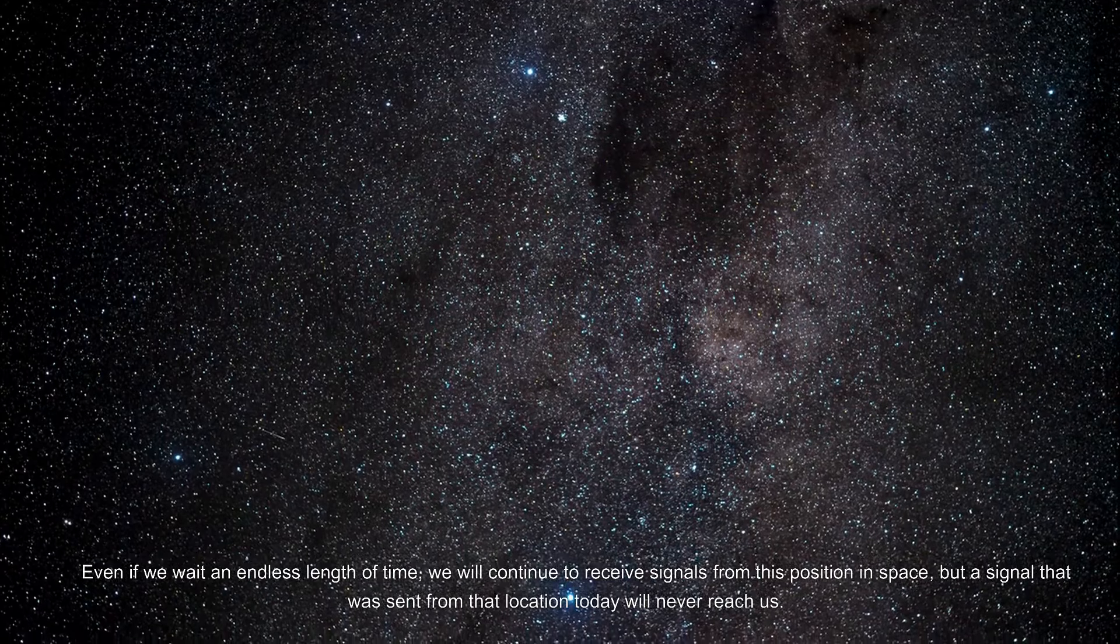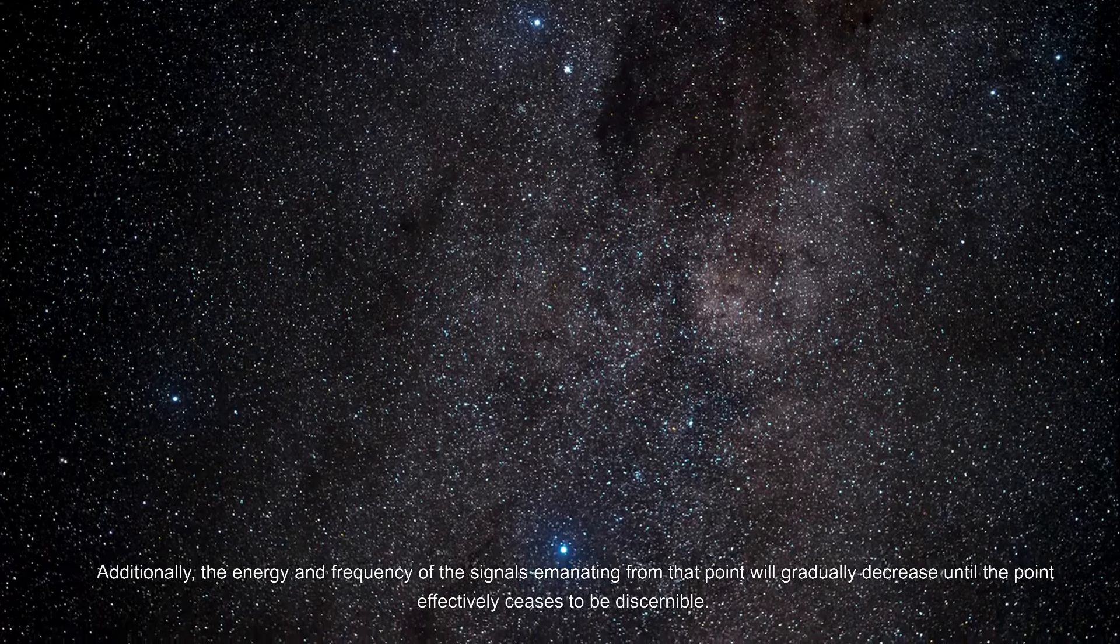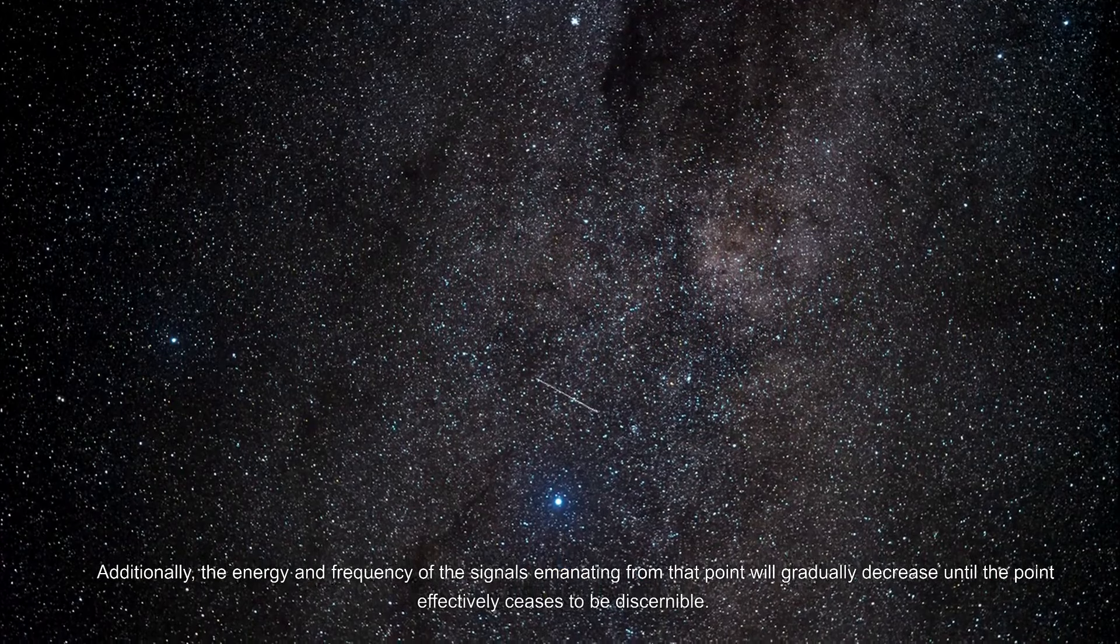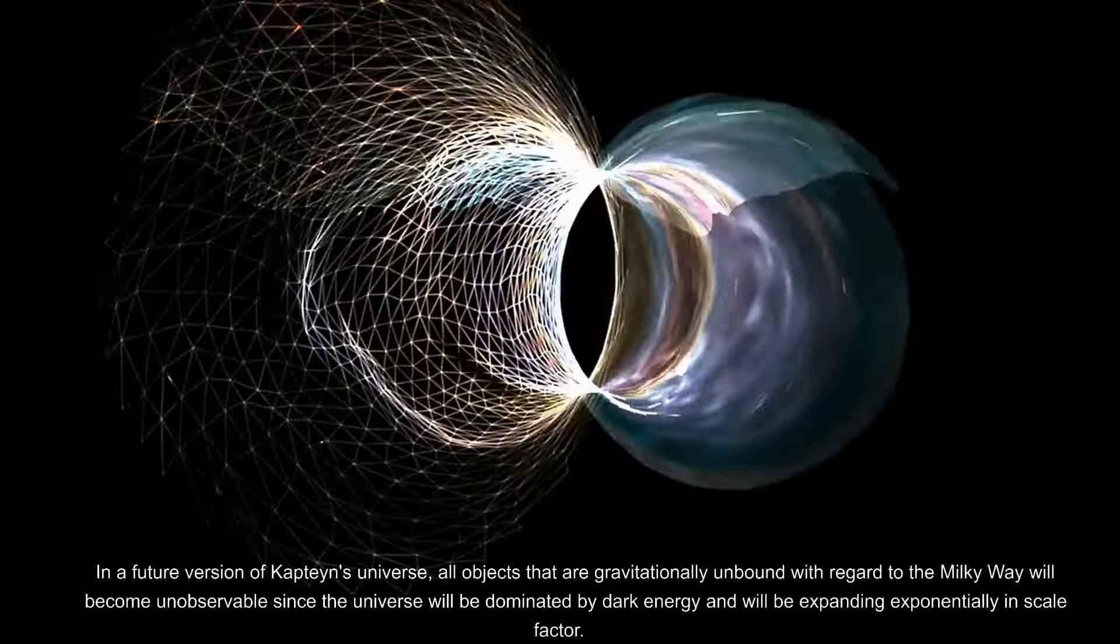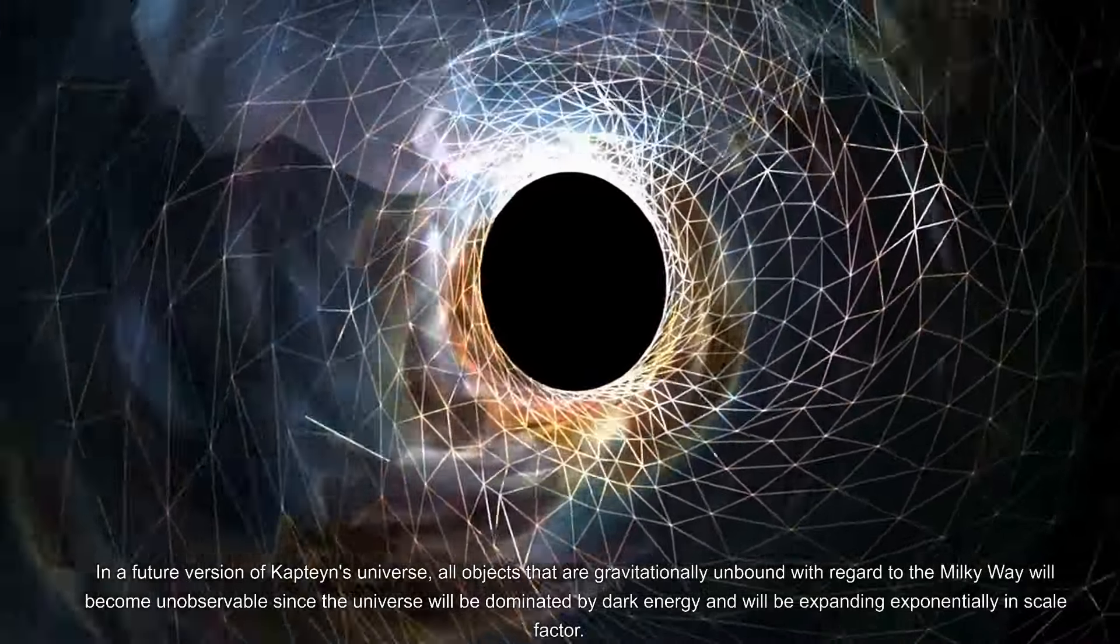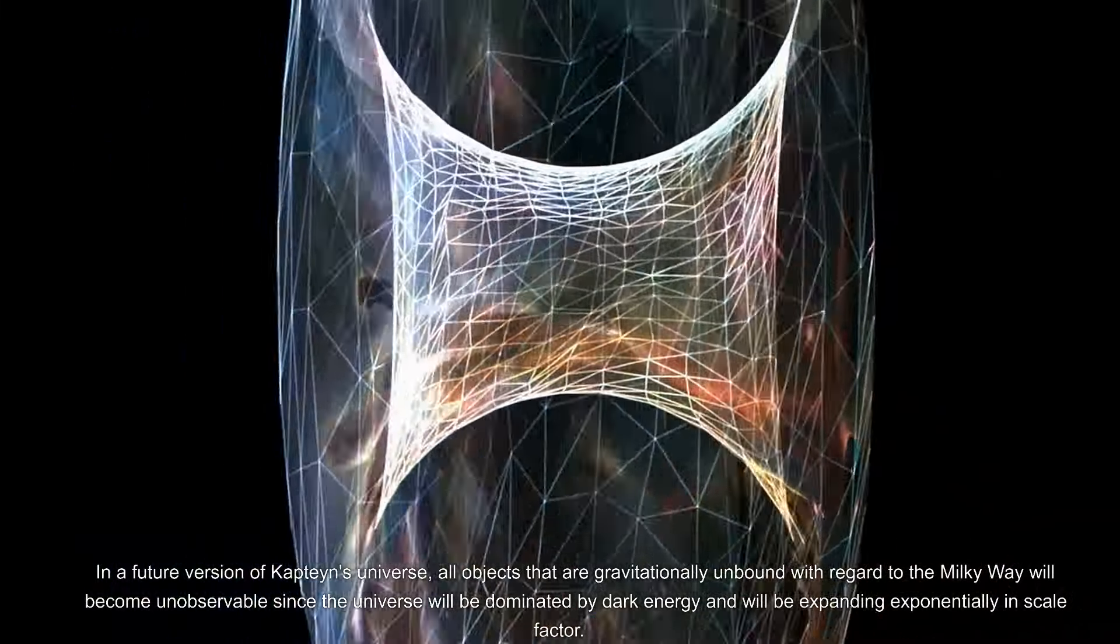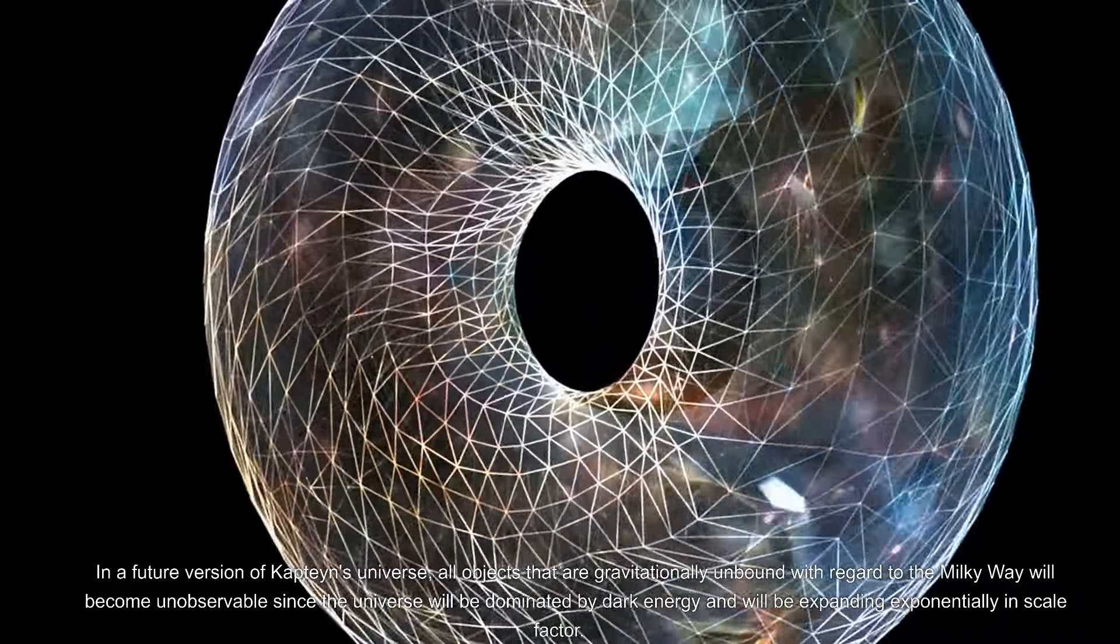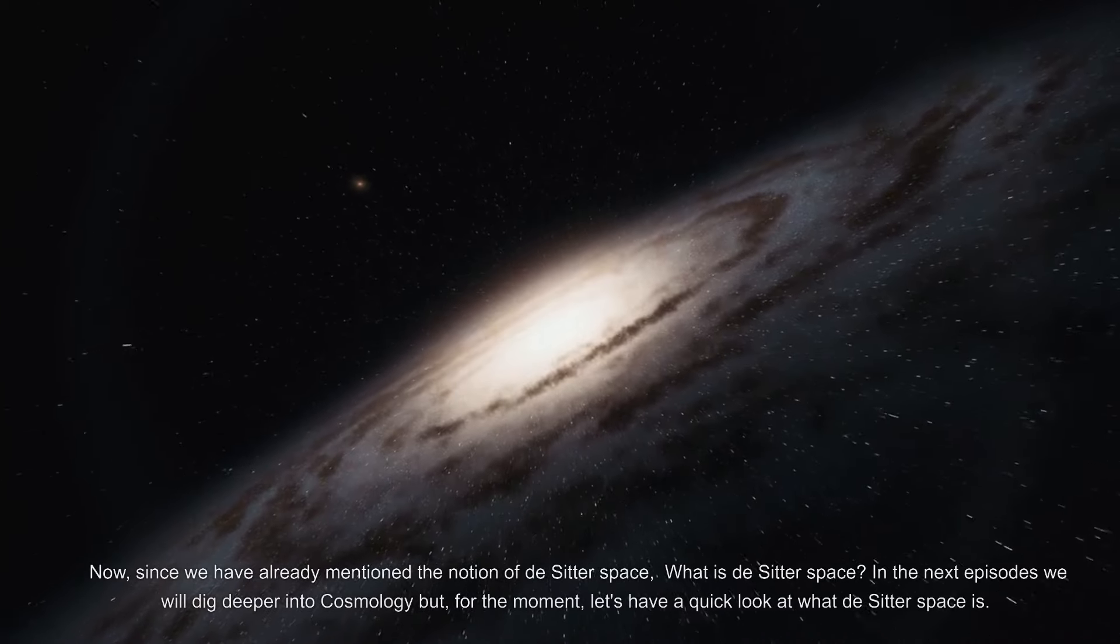Even if we wait an endless length of time, we will continue to receive signals from this position in space, but a signal that was sent from that location today will never reach us. Additionally, the energy and frequency of the signals emanating from that point will gradually decrease until the point effectively ceases to be discernible. In a future version of de Sitter's universe, all objects that are gravitationally unbound with regard to the Milky Way will become unobservable, since the universe will be dominated by dark energy and will be expanding exponentially in scale factor.